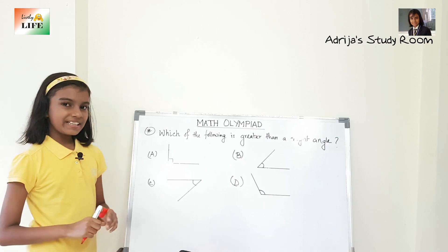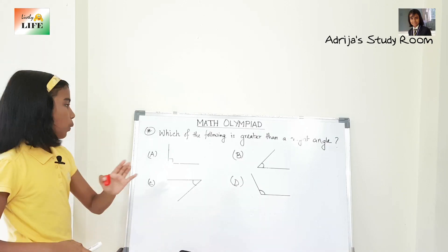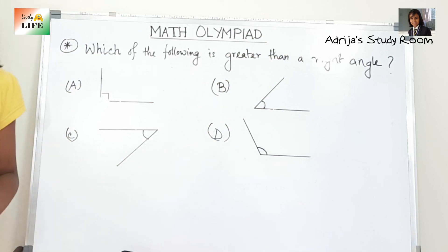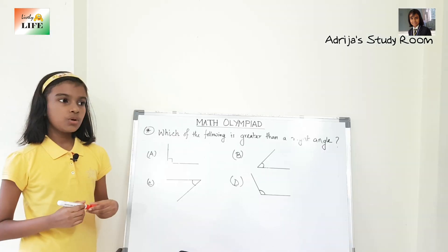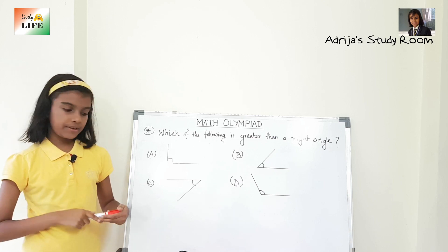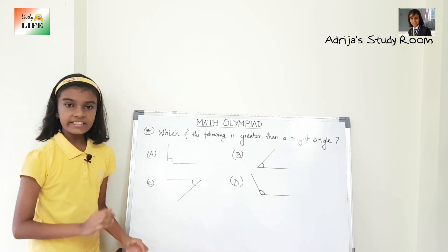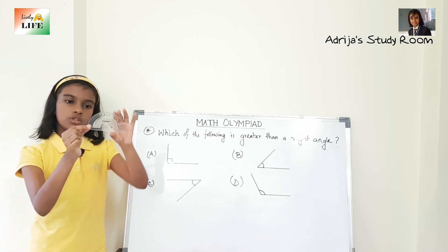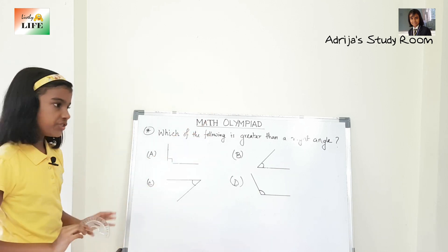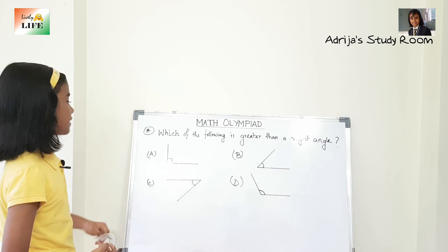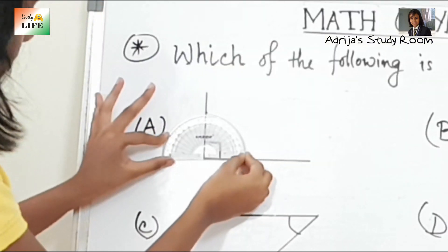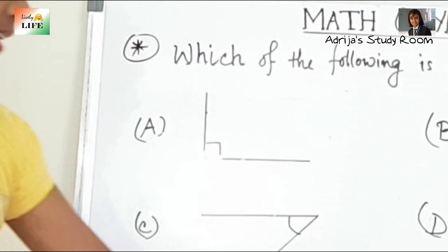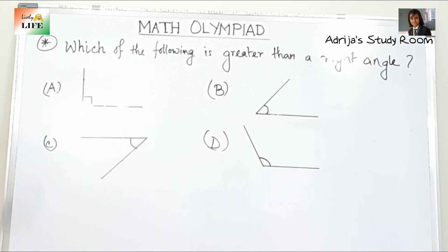The next question is about angles. Which of the following is greater than a right angle? A right angle means 90 degrees, so we have to find an angle greater than 90 degrees. To measure angles we need a protractor. We will measure these angles with the protractor. The first one is perfectly 90 degrees.